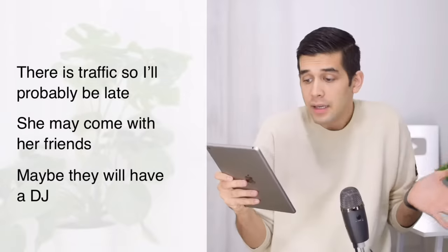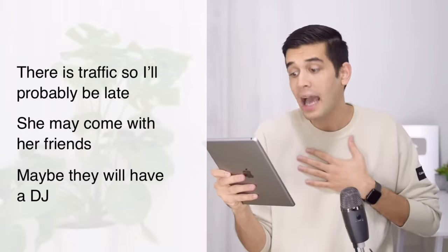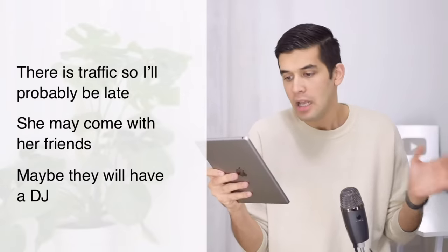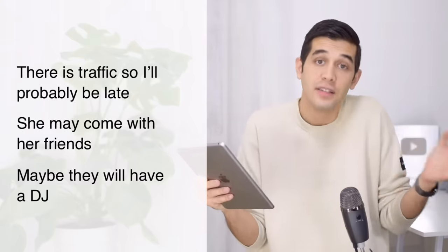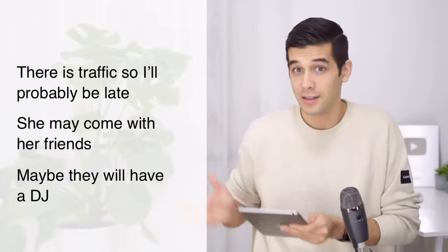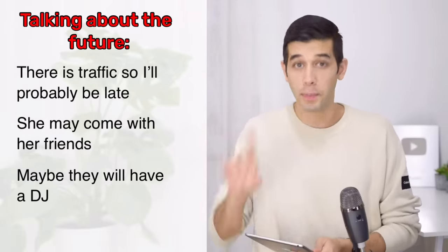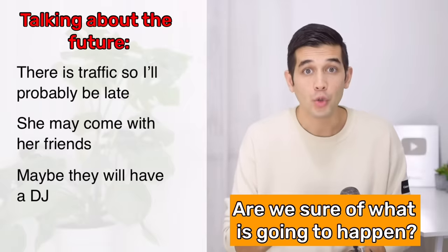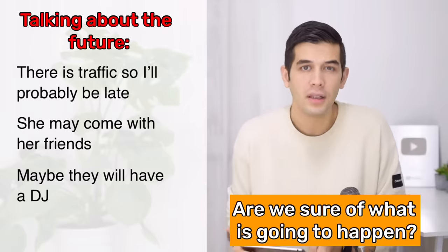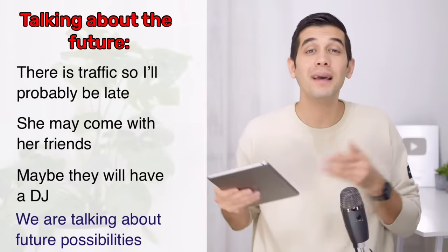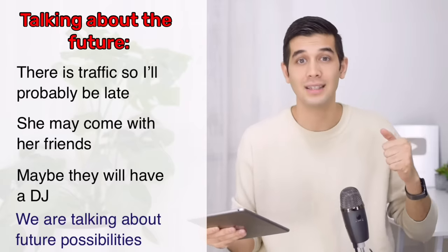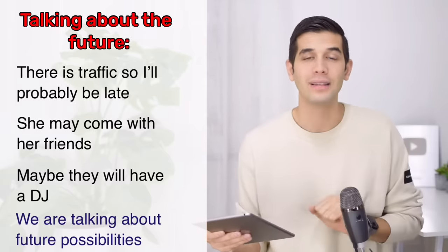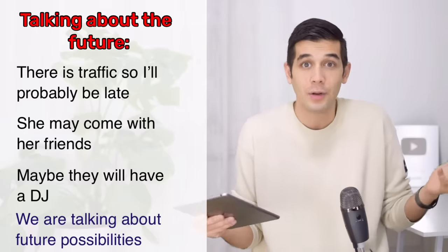And now, time for lesson three. Look at these sentences: there is traffic, so I will probably be late; she may come with her friends; maybe they will have a DJ. These sentences are talking about the future, but are we sure of what is going to happen? No — we are talking about future possibilities. There are many different ways to talk about future possibility, but these three are the most common ones. Let's take a look at the structure.